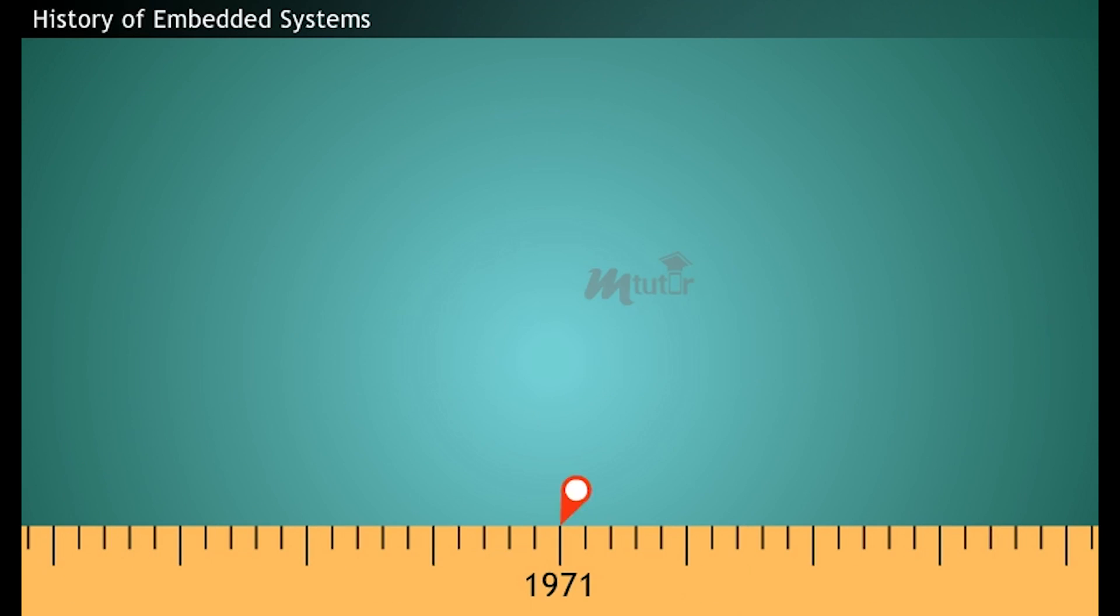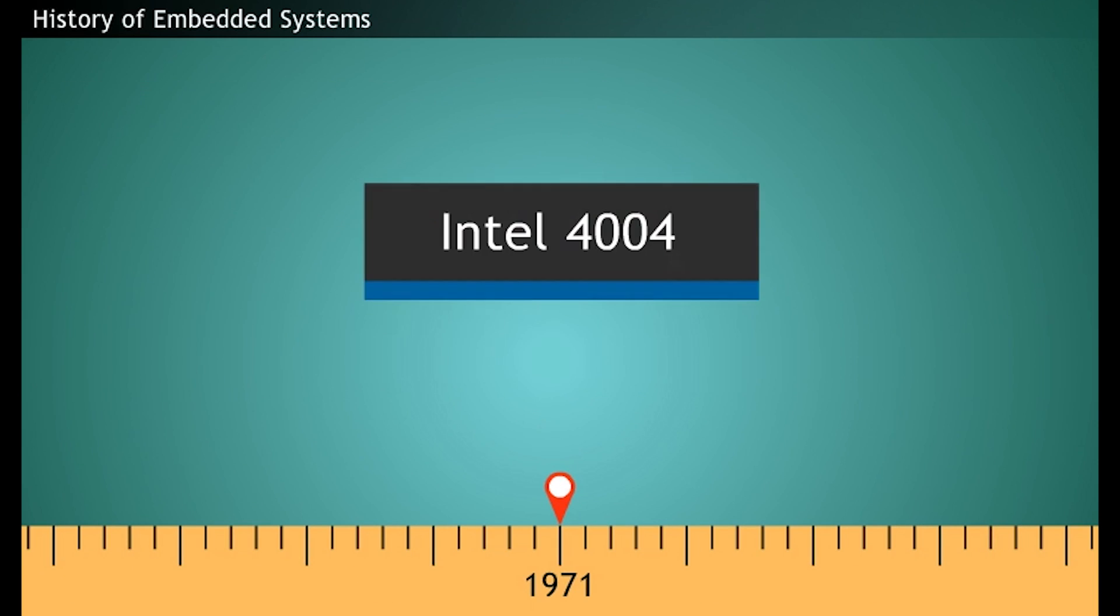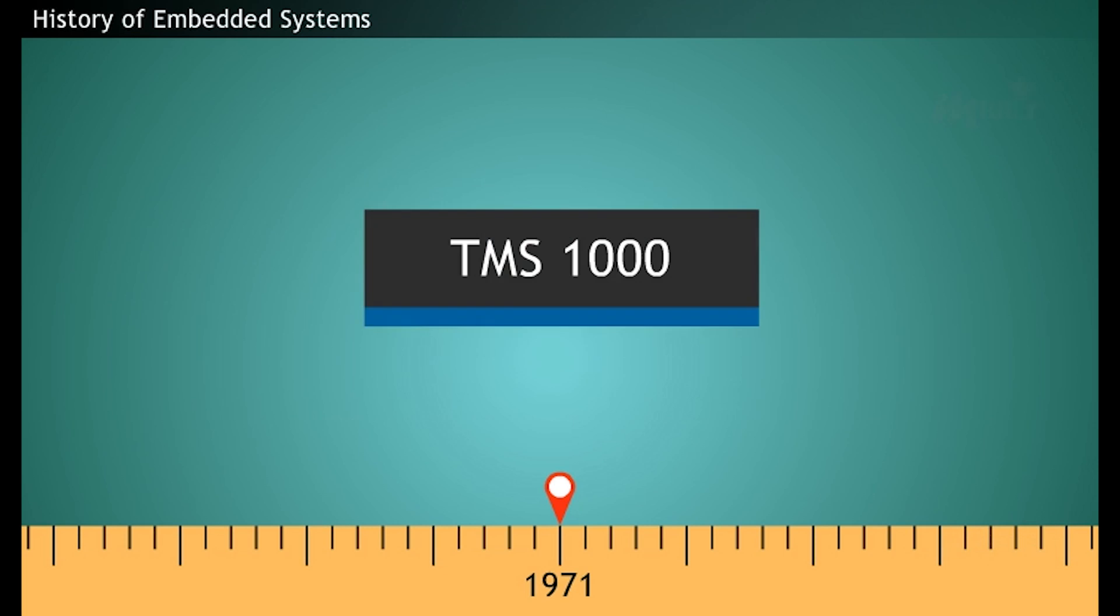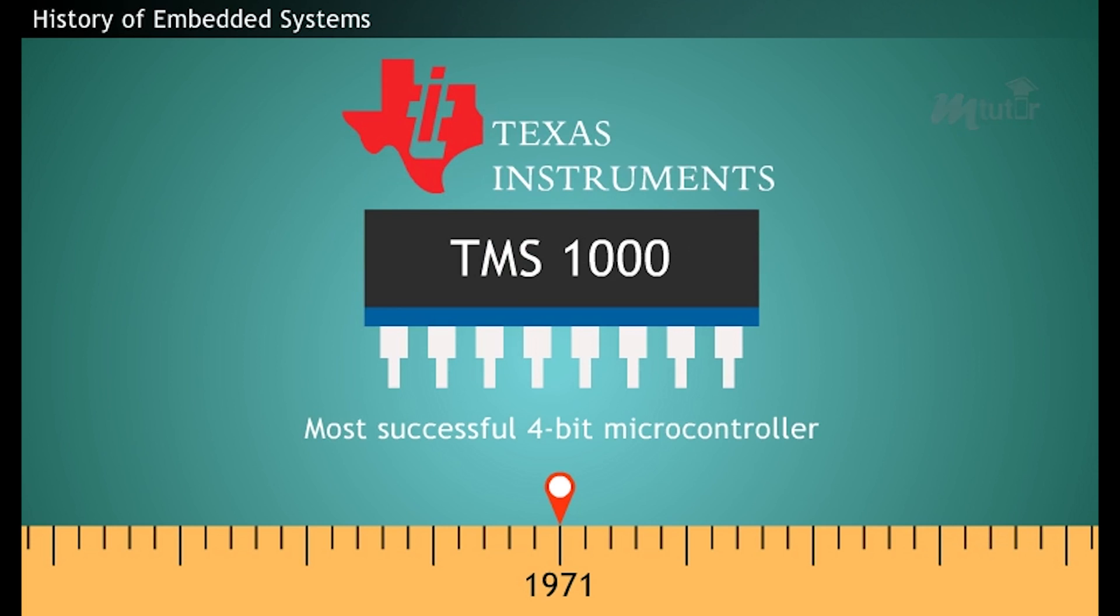In 1971, Intel 4004, the first 4-bit microprocessor was developed by Intel scientists. In the same year, TMS 1000, one of the most successful 4-bit microcontroller was developed by another semiconductor giant, the Texas Instruments.